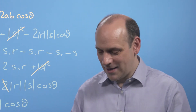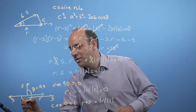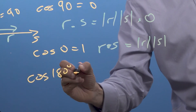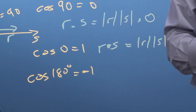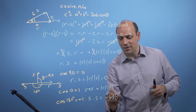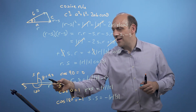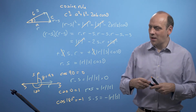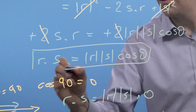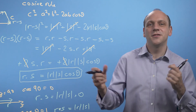One last one: if r and s are in opposite directions — say s was going this way and the angle between them was 180 degrees — cos of 180 degrees is equal to minus 1. So then r dot s would be equal to minus the size of r times the size of s. So what the dot product does with this cos: when the dot product is 0, they're 90 degrees to each other, orthogonal; when they're going the same way, we get a positive answer; when they're going more or less in opposite directions, we get a negative answer for the dot product.